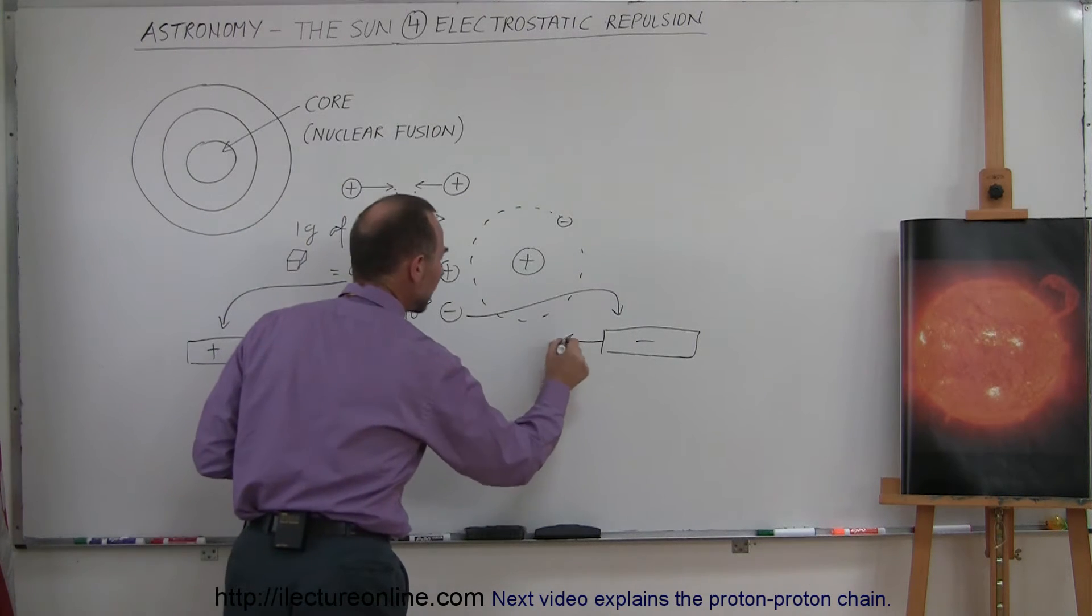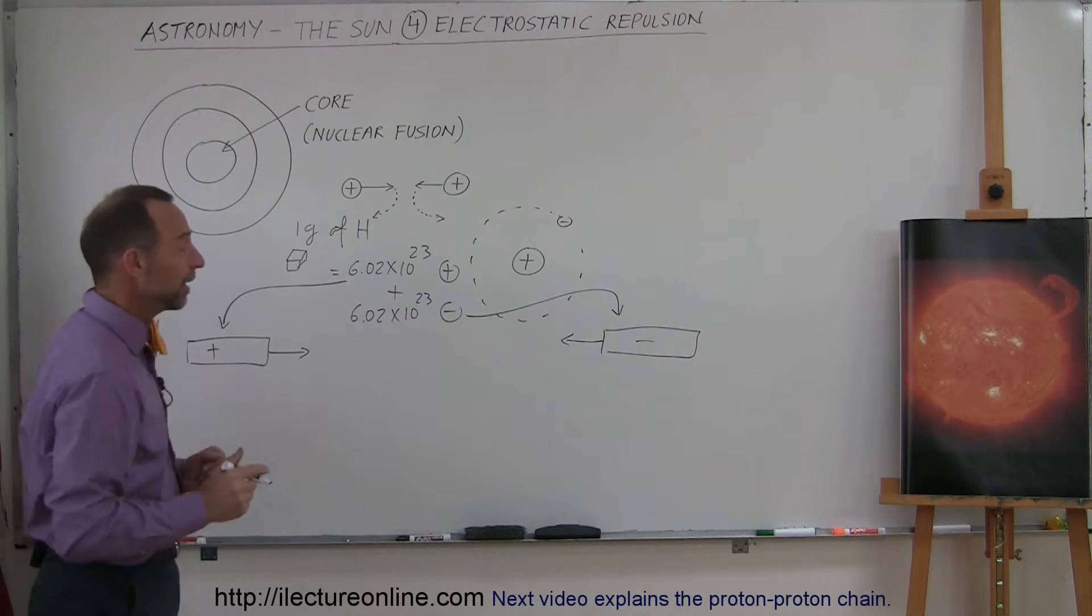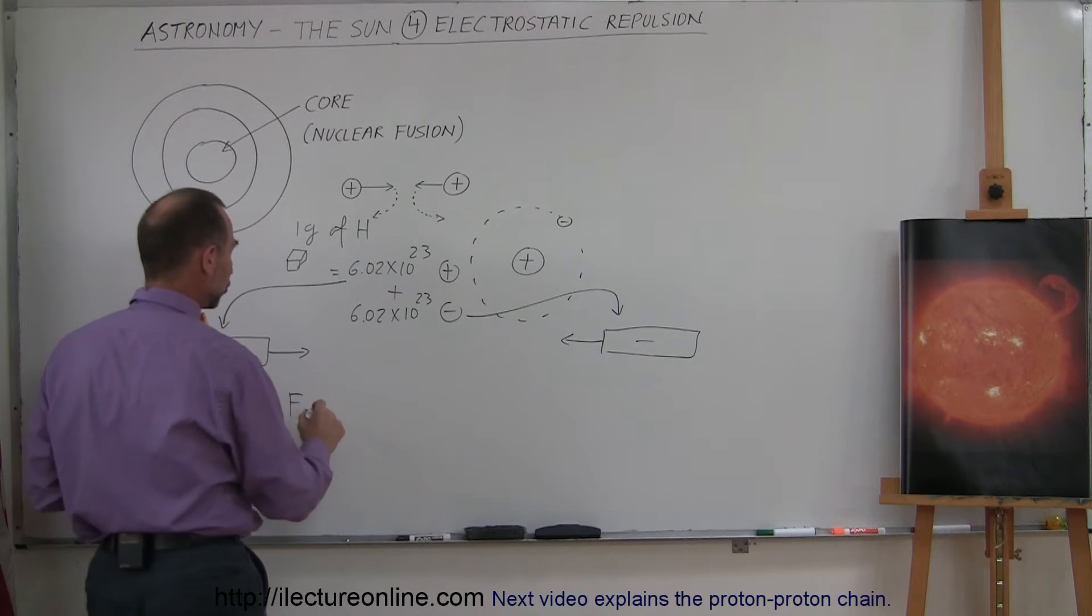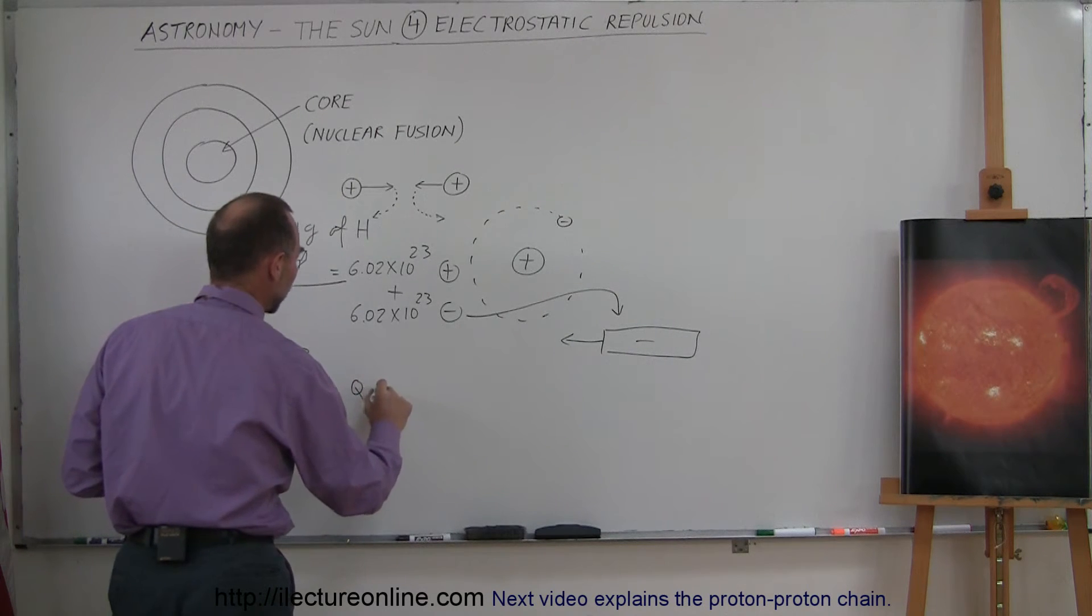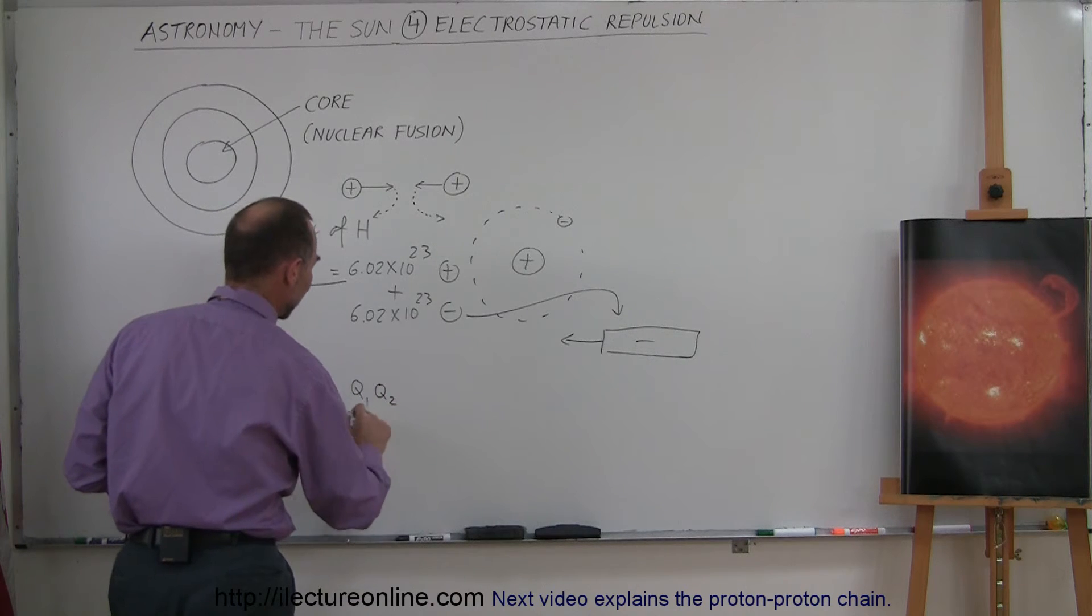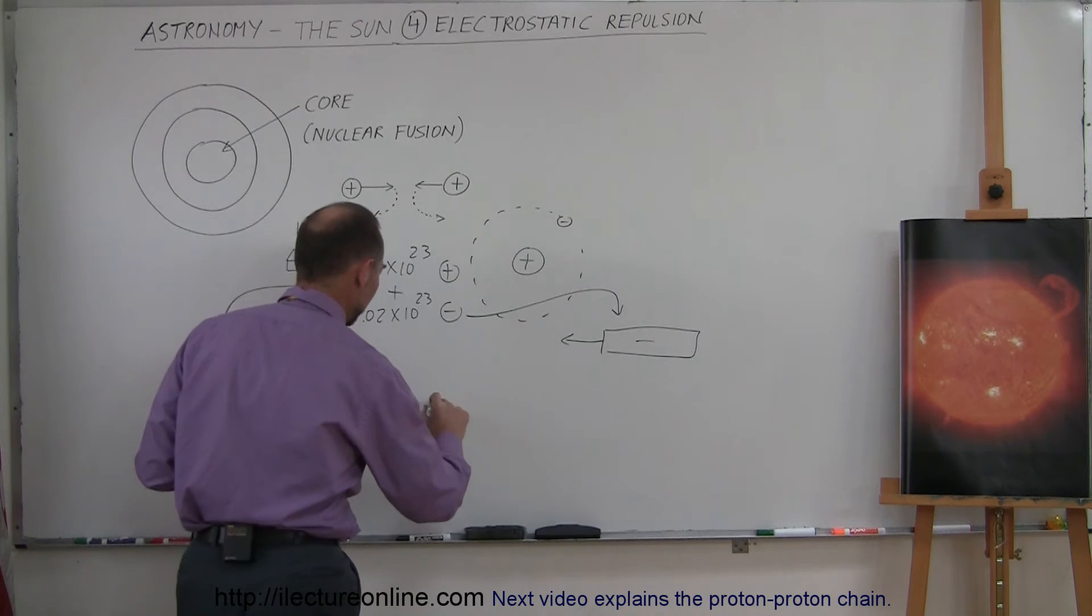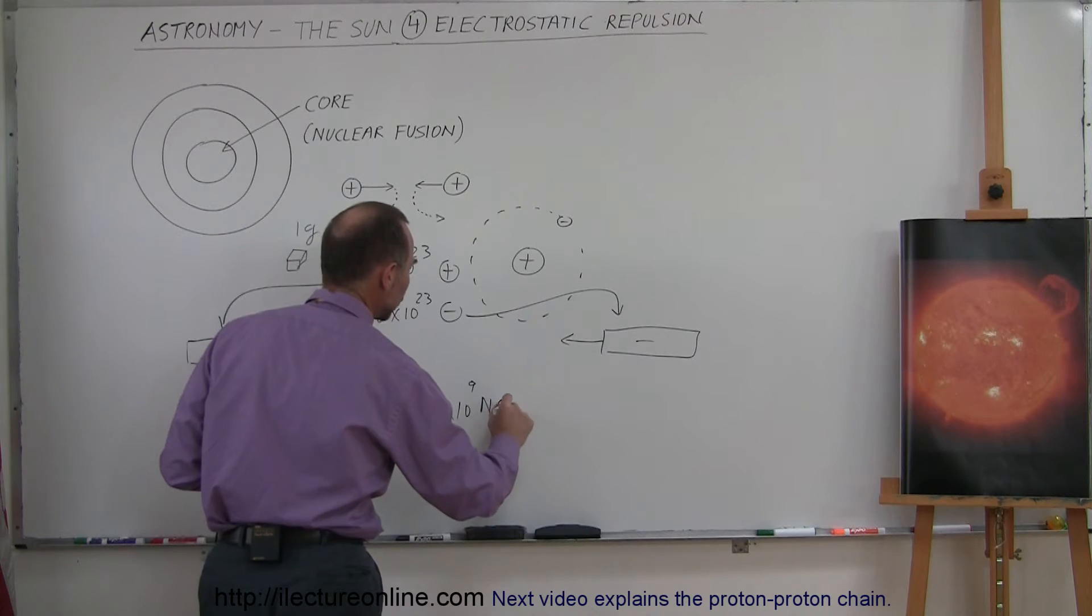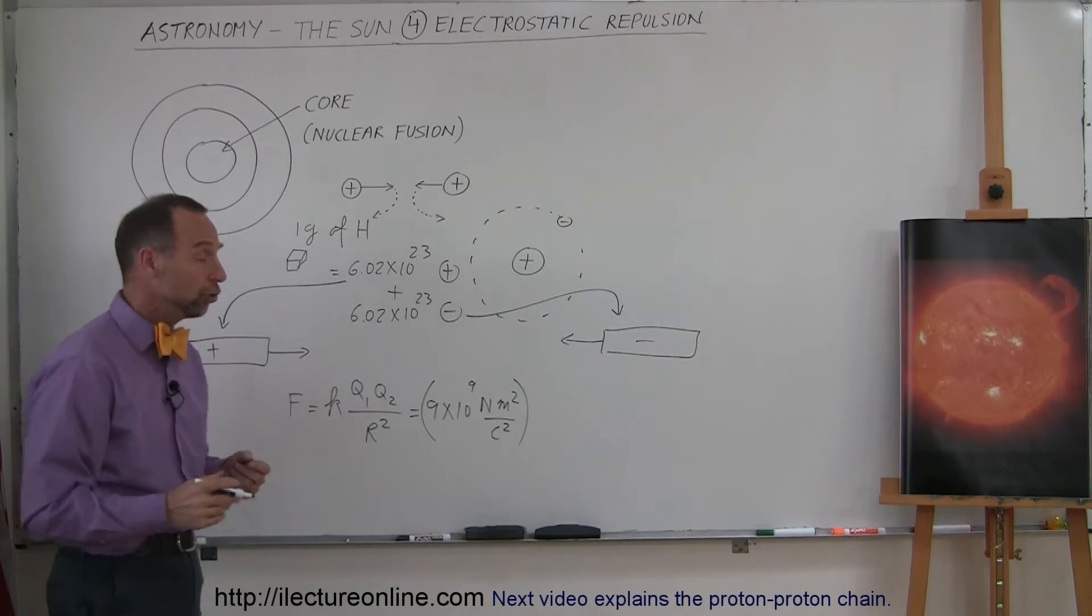So what would be the attractive forces between them? How much force would there be pulling those together? It would be quite large. So let's find out what it is. It turns out that the force of attraction between any two charged objects is equal to K times the product of the two charges, Q1 and Q2, divided by the distance between them squared. Alright. K is a constant, that's about 9 times 10 to the 9th. That would be Newton meters squared per coulomb squared. A coulomb is a unit of charge.